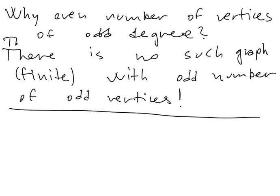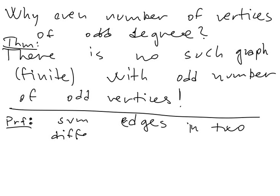This is a theorem with a simple proof—a very simple double counting argument. We sum edges in two different ways.